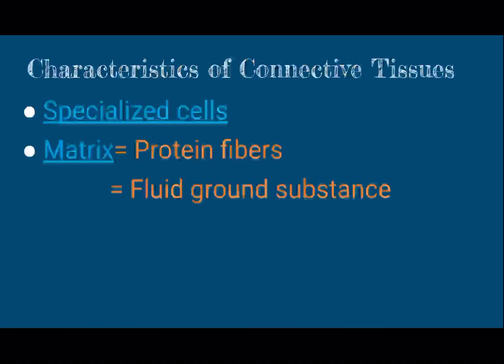The things to keep in mind about connective tissue are that form always follows function, and there are varied cells and matrix that show the different types of connective tissue. The specialized cells — we'll be learning some types in each kind — and then the matrix is covered in the back of the cells with protein fibers and what is called the ground substance. The ground substance is fluid or gel-like in the background.